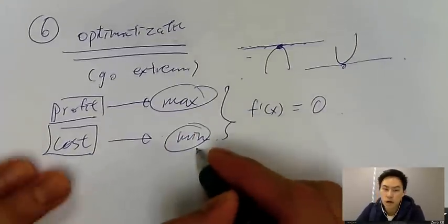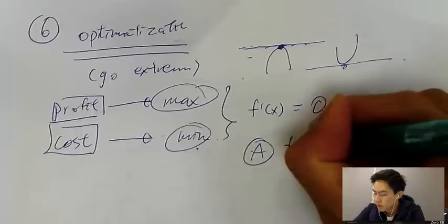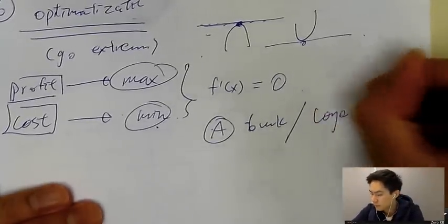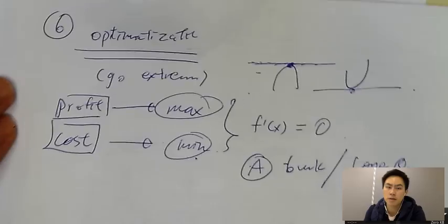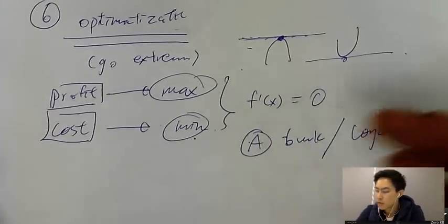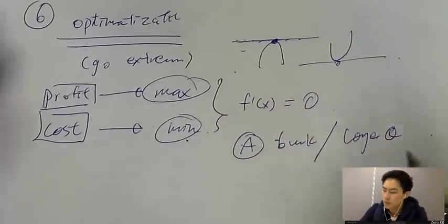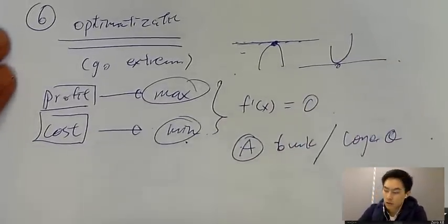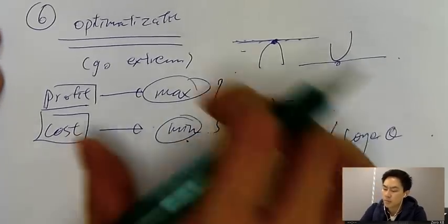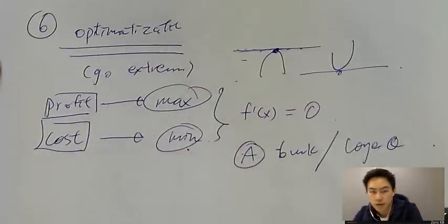This one will also sometimes be section A, maybe six mark questions, or it can be one whole long question. But this one can be hard because they can change the numbers into some difficult equation and it will be hard to calculate. Or sometimes you have to think the equation yourself, so it's not given. You understand what I'm talking about when you go through my trial lesson on the optimization.